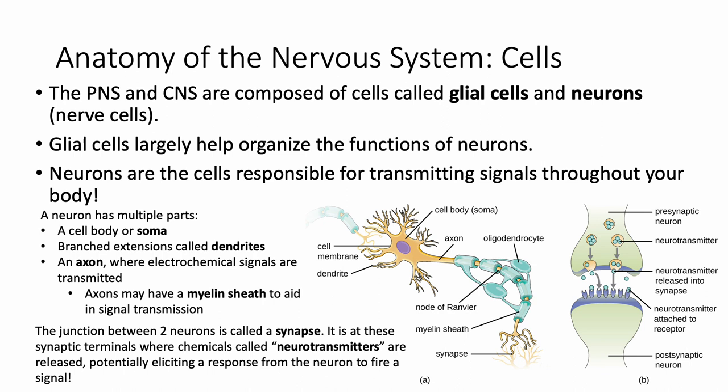Zooming in further, the peripheral and central nervous systems are composed of glial cells and neurons, or nerve cells — these terms are interchangeable. Glial cells organize the functions of neurons, but it's the neurons that are responsible for transmitting signals throughout the body, communicating with organs and muscles, and coordinating everything happening in the body.